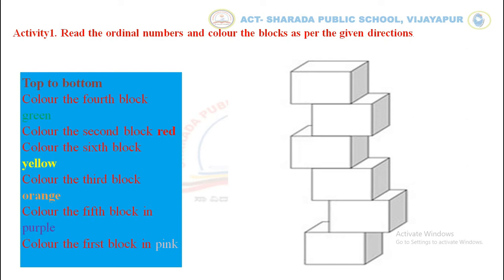Children, we have to color the blocks as per the given directions, starting from top to bottom. The 1st instruction: color the 4th block in green color. Let us read the position of blocks in Ordinal Numbers — 1st, 2nd, 3rd, 4th. The 4th block we have to color in green color.